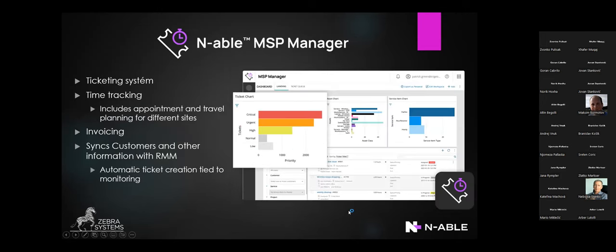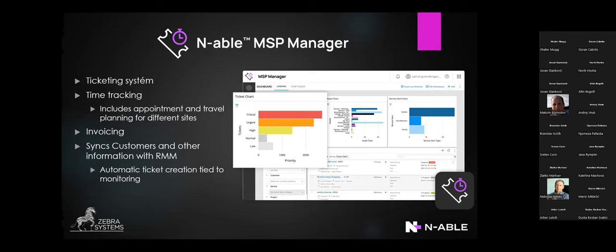The last part is MSP Manager. Primarily it's a ticketing system, but it has more capabilities than that. You can get a nice time tracking solution — track time spent on solving individual tickets. You can plan appointments, and it has a very nice mobile app where you can also plan travel times to different customers. You can get the basis for your invoicing from there, because you can track time and set up different service rates for different kinds of issues, then run a report at the end of each month to invoice customers.